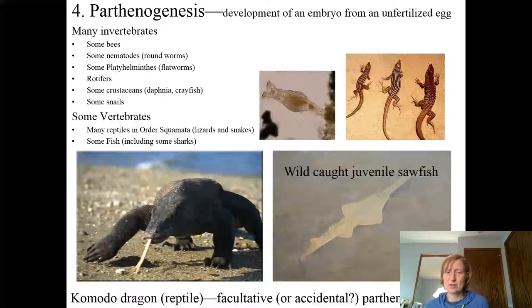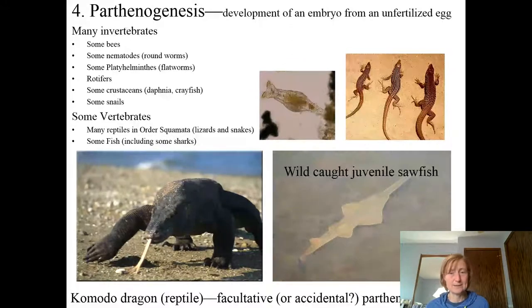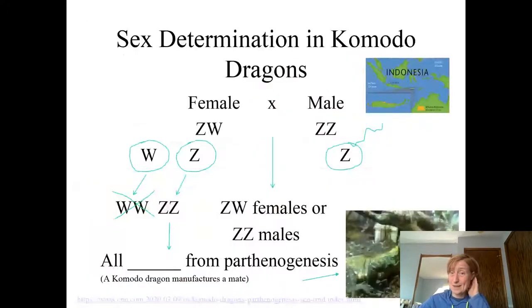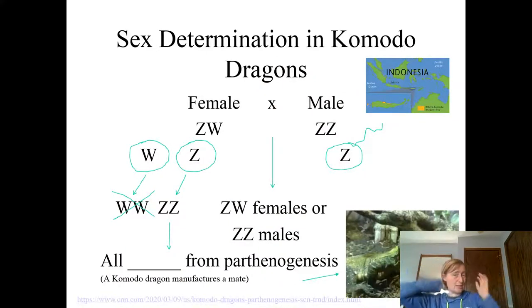How does this happen? And are they exact clones of mom — is she making more female Komodo dragons? That would make sense, but it's not exactly right. By the way, Komodo dragons live on small islands in places like Indonesia.